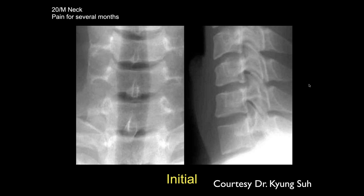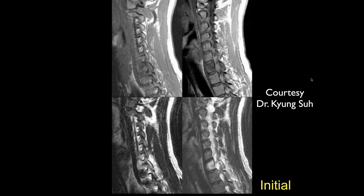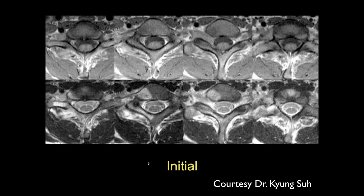Ashu, what do you think of this one? Looking at the plain films, I'm not really seeing too much here. These are the initial ones, AP and lateral. Here's the initial MR. So here you can see some marrow-replacing lesion within the lower cervical vertebral body, extending posteriorly to involve part of the posterior elements — increased T2 signal, low T1. And it looks like it's going into the facet. You can see it's definitely involving that posterior right vertebral body and extending into the medial aspect.